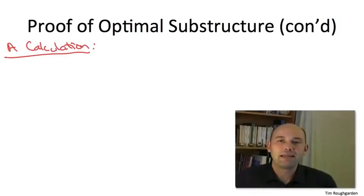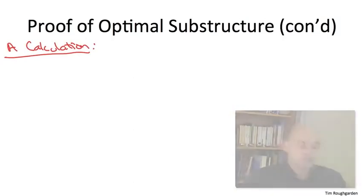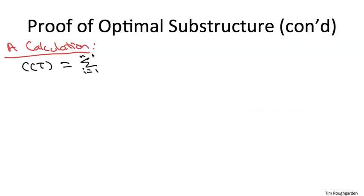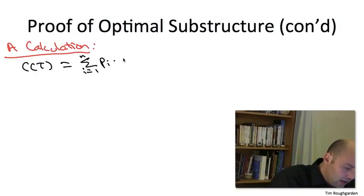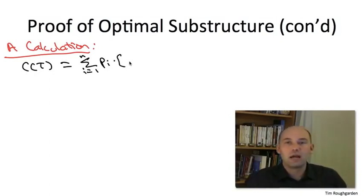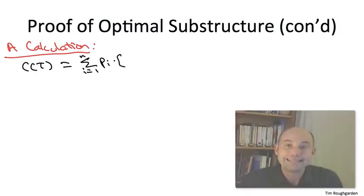So let's begin just by expanding the weighted search time of our original tree, capital T, the purportedly optimal one. Let's expand its definition. So you have sum from 1 to n for each of the items i, and the weight we give to a given item is just its frequency p sub i, and we multiply that by the search time for i in T.